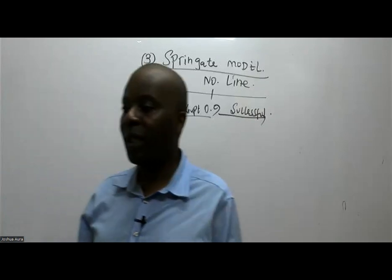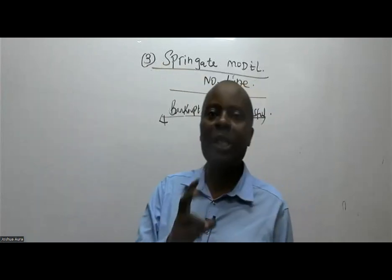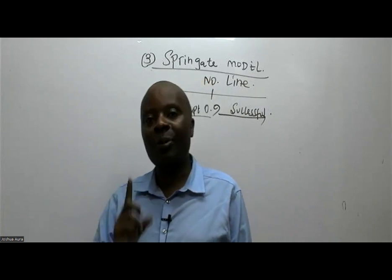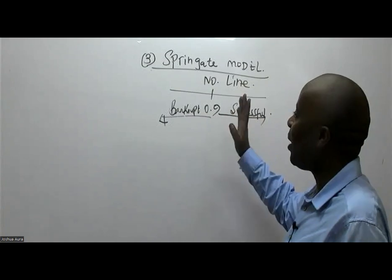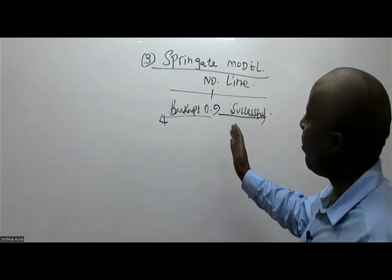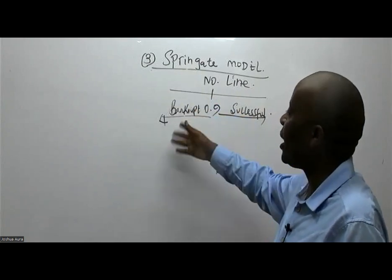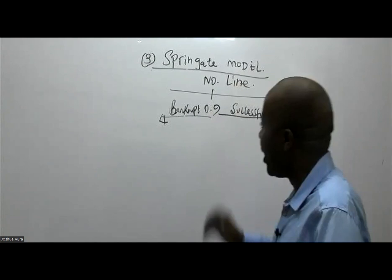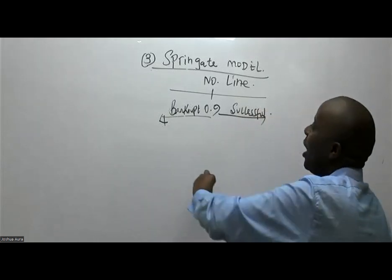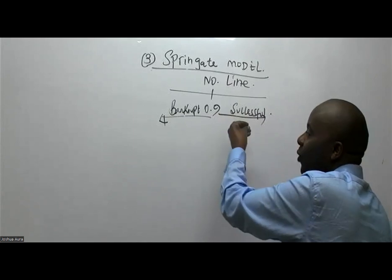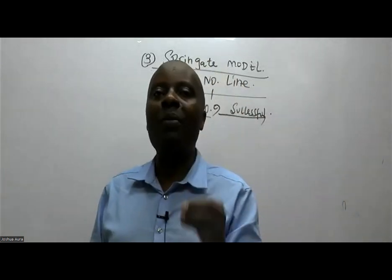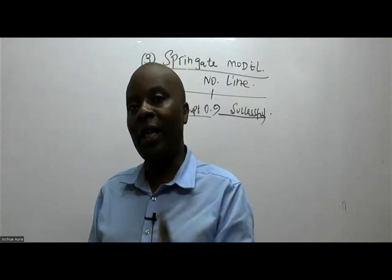We are talking about the Springate model, which is a serious model for measuring the risk of bankruptcy. The most important thing to understand under the Springate model is this number line that gives us the threshold of corporate failure. We compute a Z value — for example, if Z is 0.4, our threshold is 0.9, so anything below 0.9 means the company is bankrupt. If Z is something like 1.8, which is more than 0.9, we say the firm is successful.